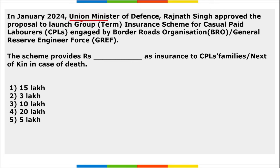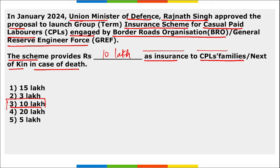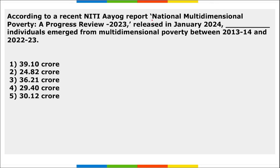Union Minister of Defence Rajnath Singh approved a proposal to launch a Group Insurance Scheme for Casual Paid Laborers (CPLs) engaged by the Border Roads Organization (BRO) and General Reserve Engineer Force. The scheme provides 10 lakh rupees as insurance to CPL families — or next of kin — in the case of death.